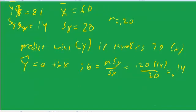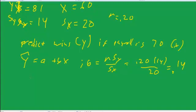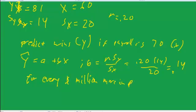So incidentally that says that for every million more in payroll, we expect 1.4 more wins.